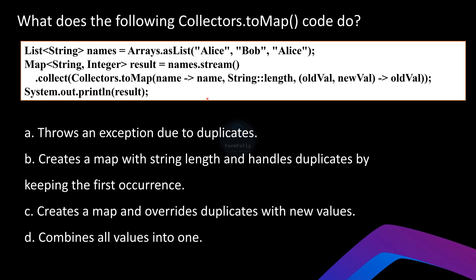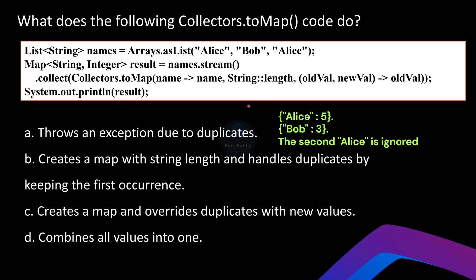The third argument is called the merge function. We need it because Alice appears twice in the list. By default, `Collectors.toMap` will throw an exception if there are duplicate keys. However, by providing a merge function, we can control how to handle those duplicates. In this case the function `(oldVal, newVal) -> oldVal` means if there is a duplicate, keep the old value and discard the new one. So the first Alice with length 5 is kept and the second Alice is ignored.